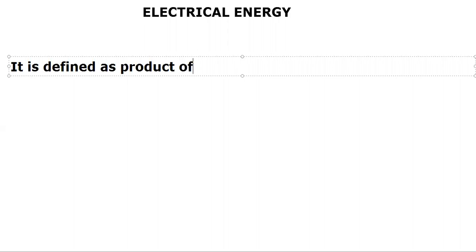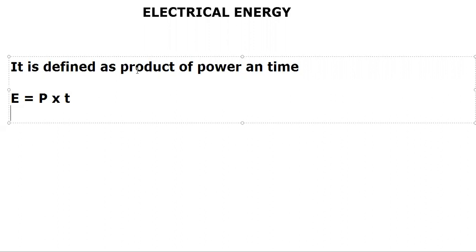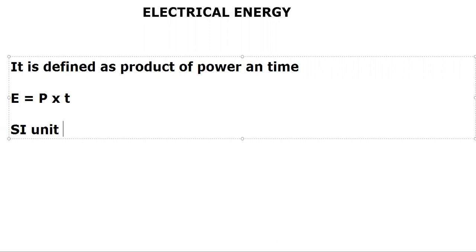Electrical energy is defined as the product of power and time. The formula is E = P × T. The SI unit of energy is always Joule — whether it is mechanical, electrical, kinetic, or potential energy, the unit always remains Joule.